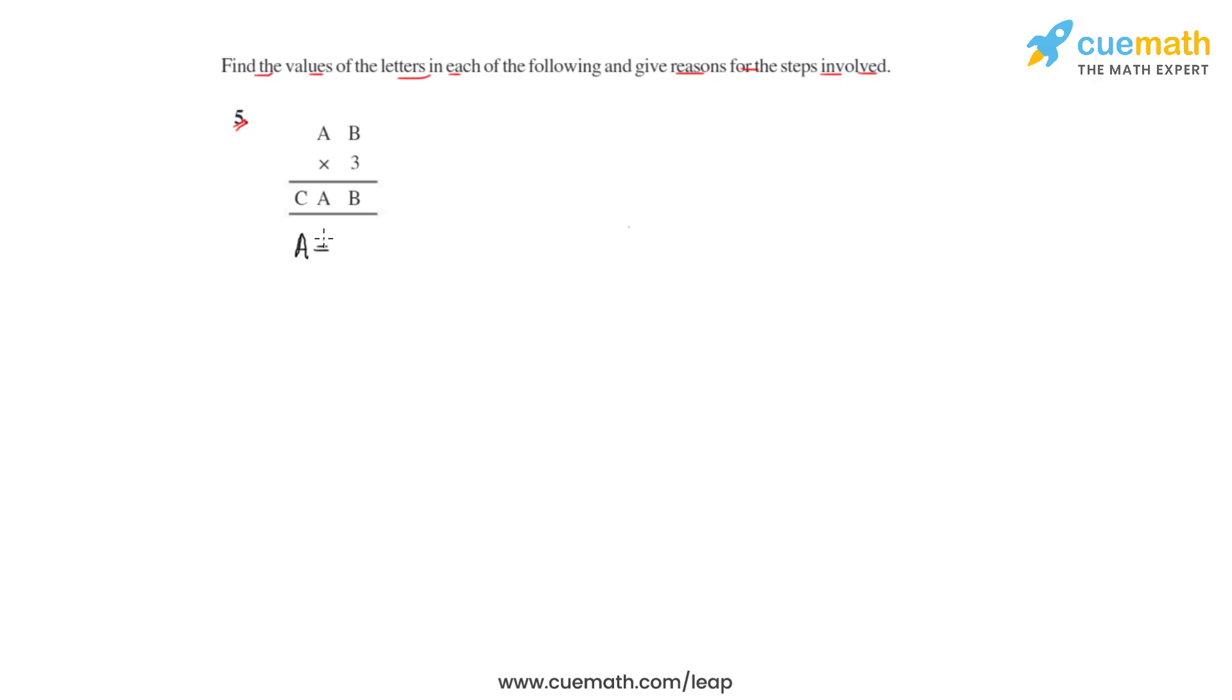Also, the value of C would not be equal to zero because the result of this multiplication product is a three-digit number. We'll have to keep in mind that each of these letters represents one single digit. Now let us observe the product in the ones column.